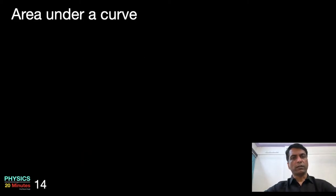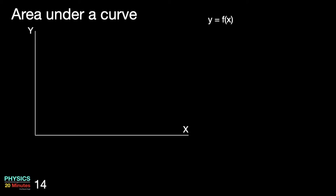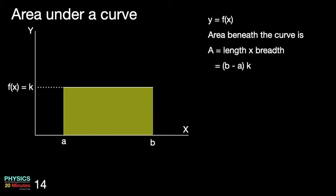So how do we find the area under the curve? Let's have our x and y axis where y is a function of x. Let's have a very simple curve — a straight line parallel to the x axis. Such a line's function can be written as f(x) = k, where k is a constant. We want to find the area between this straight line and the x axis, bounded by two limits a and b. This area is a rectangle. Area of a rectangle is length times breadth. Its length is b minus a and its breadth is k, therefore the area is (b − a) × k.